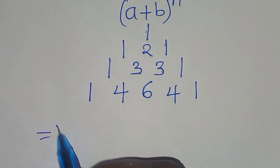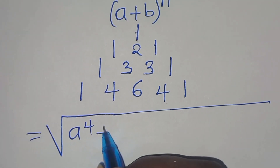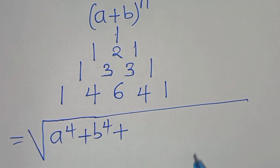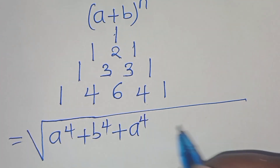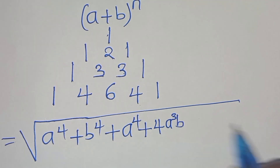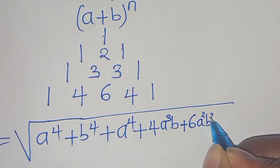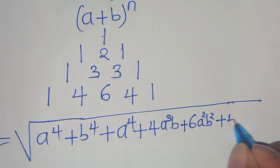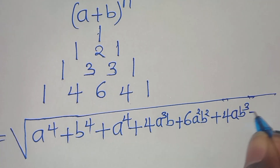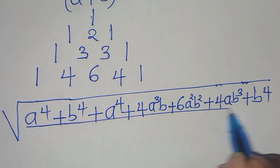So now we have the square root of a to the power of 4, plus b to the power of 4, plus — expanding (a+b)⁴ — a to the power of 4, plus 4a to the power of 3 times b, plus 6a to the power of 2 times b to the power of 2, plus 4a times b to the power of 3, plus b to the power of 4, everything divided by 2.